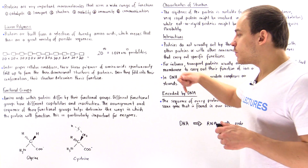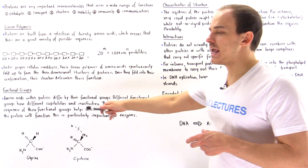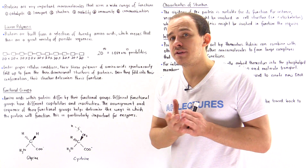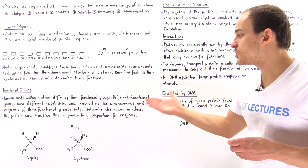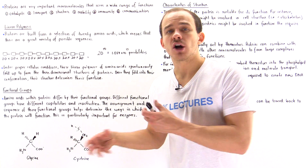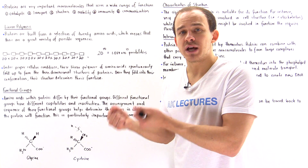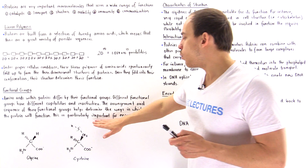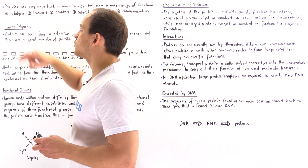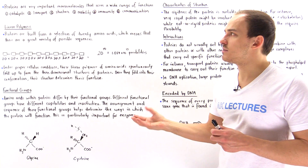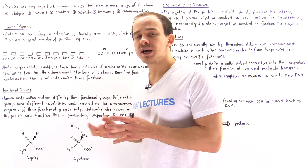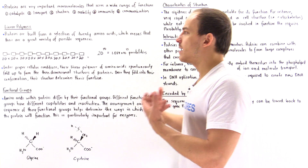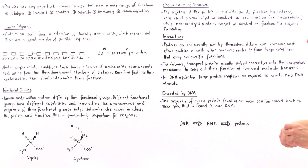Basically, different functional groups have different capabilities and different reactivities. The arrangement and sequence of these amino acids and their functional groups helps determine the ways in which proteins are involved in the different types of reactions inside our body. This is particularly important when we discuss enzymes — those biological catalysts — because they use these functional groups to carry out different types of reactions and speed up biochemical processes inside our body.